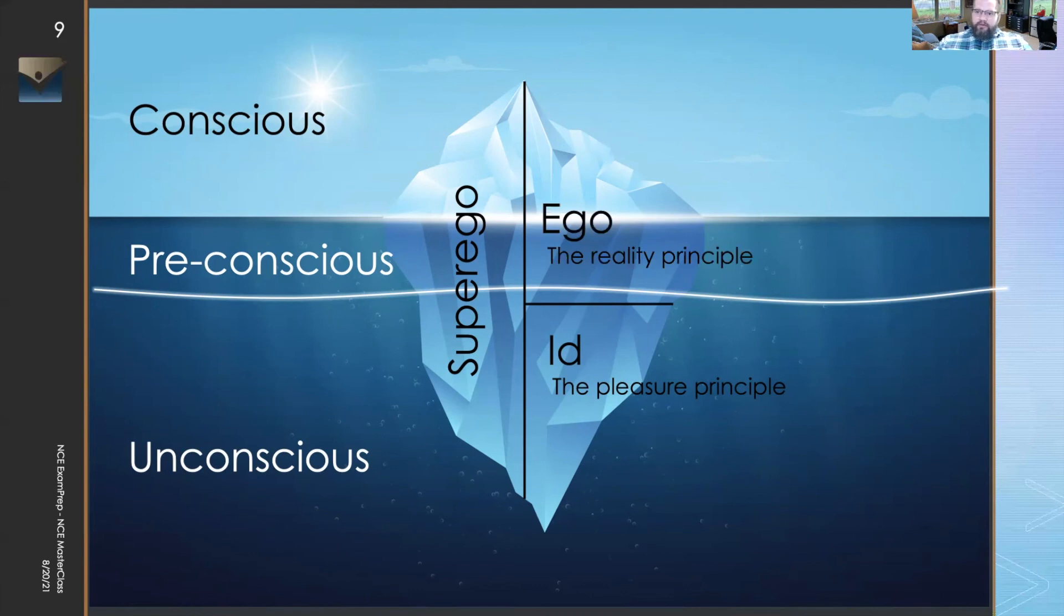The ego is based on the reality principle, which basically means that what you choose to do with that information is the way that our personality shows up in response to feeling these senses of shame or pride.